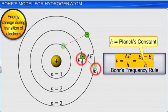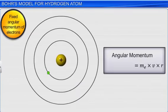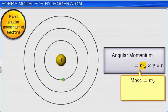The fourth postulate states that an electron moving in a circular orbit has an angular momentum equal to the product of its mass me, linear velocity v, and radius of orbit r.